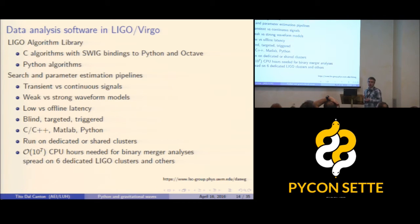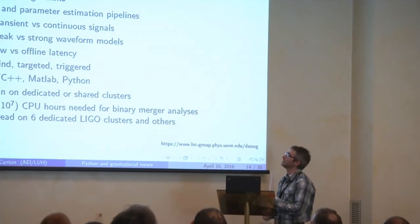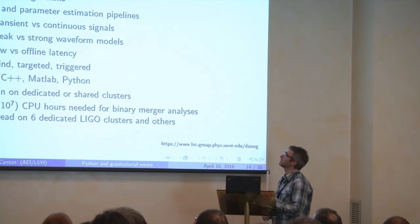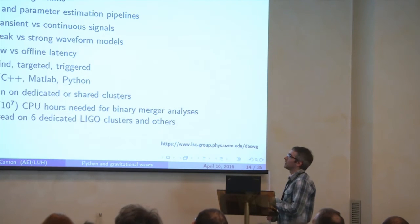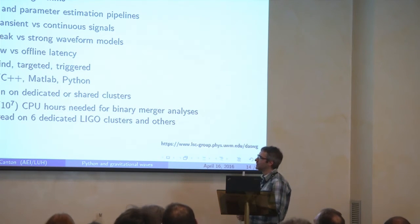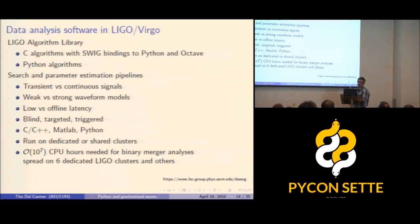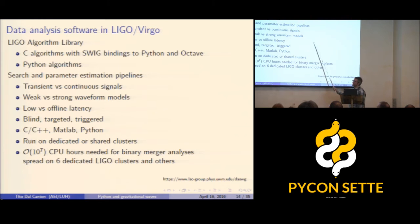Here is an overview of the software and libraries we use. We have a big library called the LAL library — the LIGO Algorithm Library — mostly written in C with some Python, with a SWIG interface callable from Python and Octave. This contains handling of time series, models of binary coalescence waveforms, and much more.